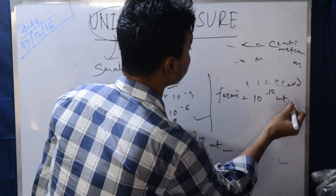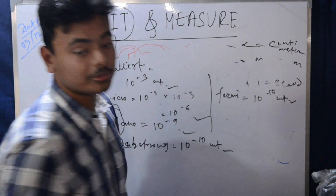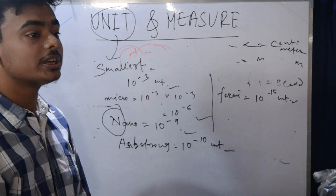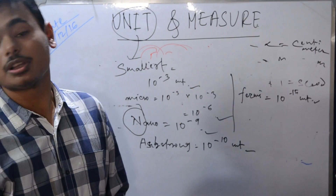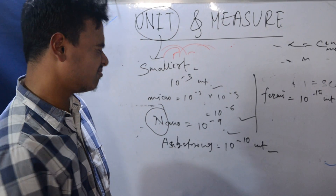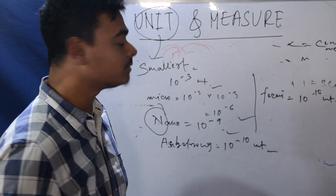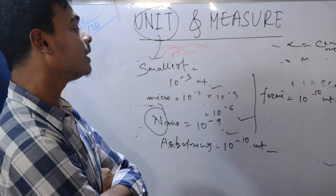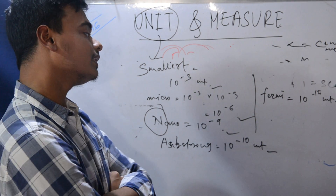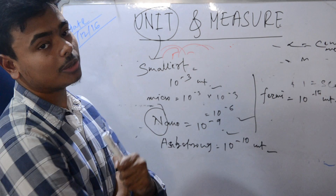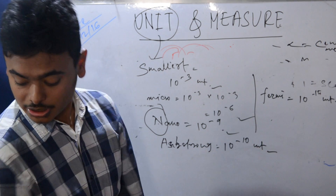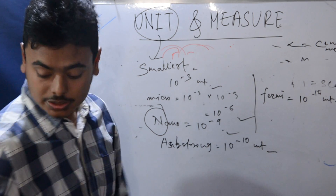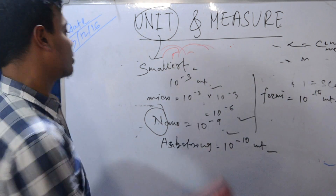What is fermi used for? It is used in nuclear science. In nuclear physics, you use fermi — also called femtometer. This is the importance of the smallest length unit.